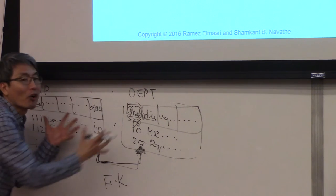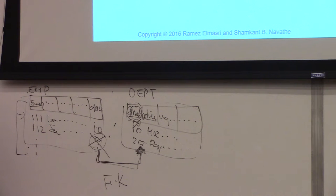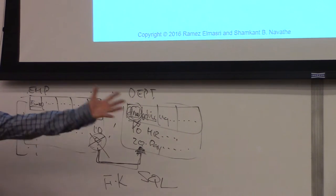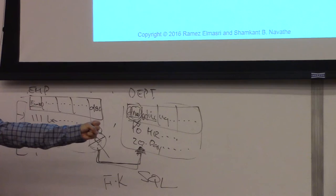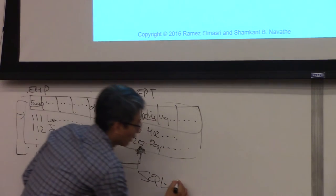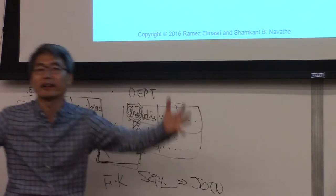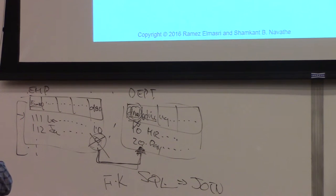The foreign key keeps the system consistent. Later, when we talk about SQL, this will become the join operation — combining two tables. You have heard about what a join is.